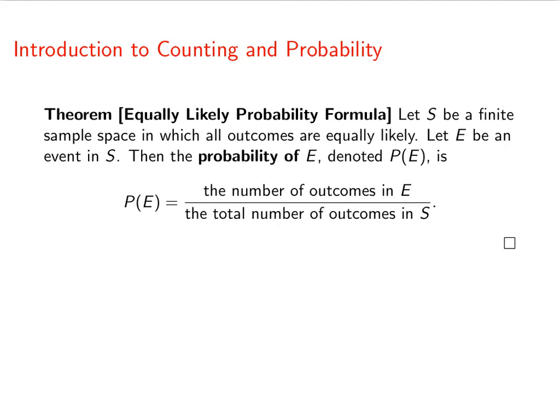So that's encapsulated in this theorem. This is the equally likely probability formula, which says that if you have a finite sample space, and all the outcomes are equally likely, and if you have an event, then the probability of that event is just the number of outcomes in E, the event, divided by the total number of outcomes in S. This assumes that all outcomes are equally likely.